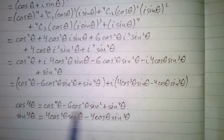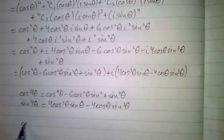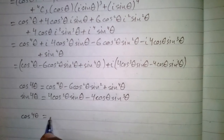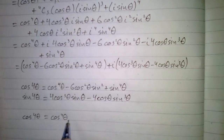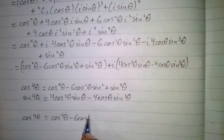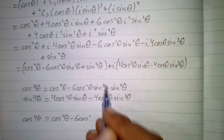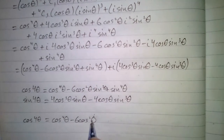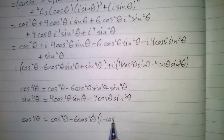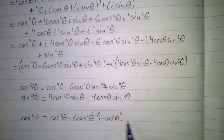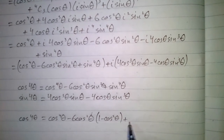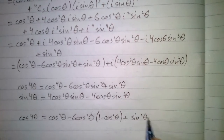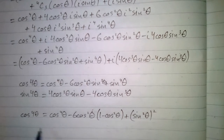Now we can further simplify cos4θ. cos4θ can be written as cos⁴θ minus 6cos²θ·(1 minus cos²θ) plus sin⁴θ, where in place of sin²θ we write 1 minus cos²θ, and sin⁴θ is written as (1 minus cos²θ)².